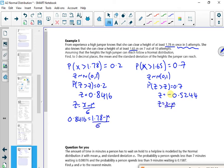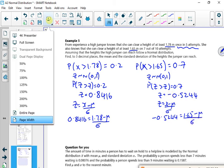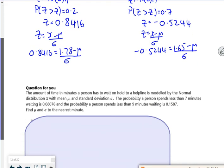Z equals X minus mu over sigma. So my minus 0.5244 is 1.65 minus mu over sigma. Do some rearranging for both of these. So I'll put it on full screen so you can see a bit better.